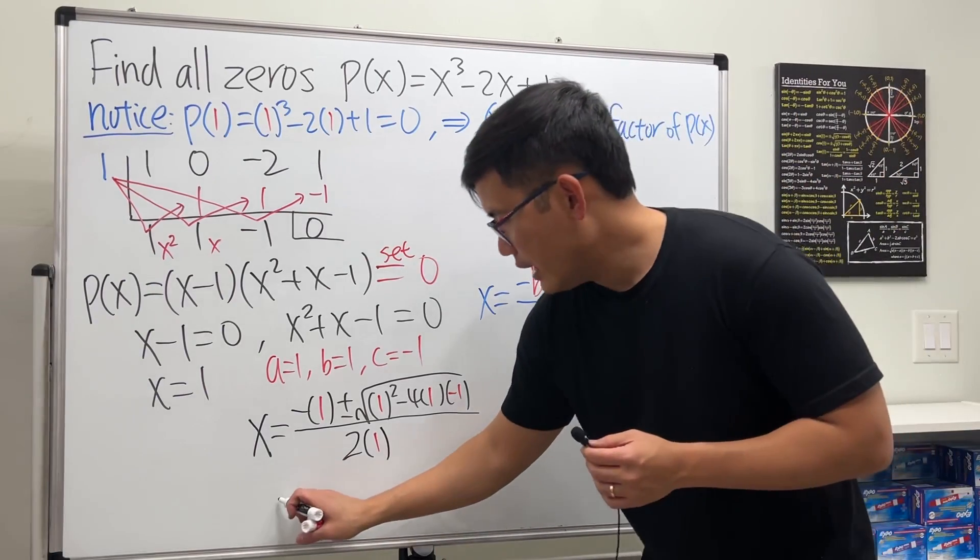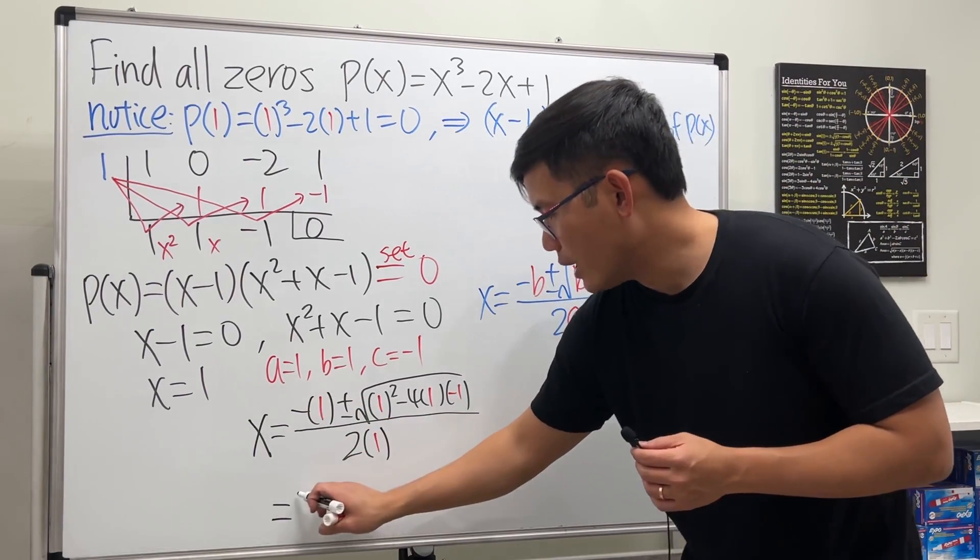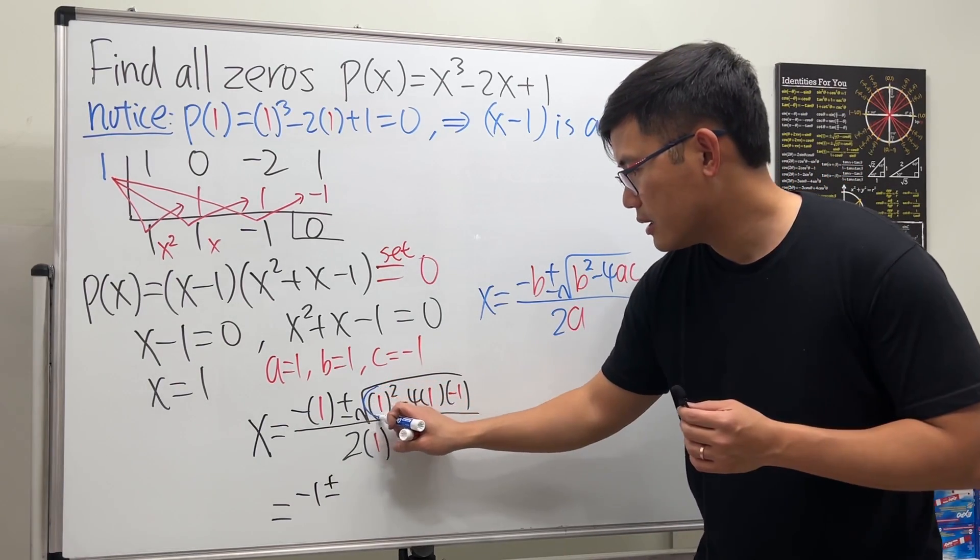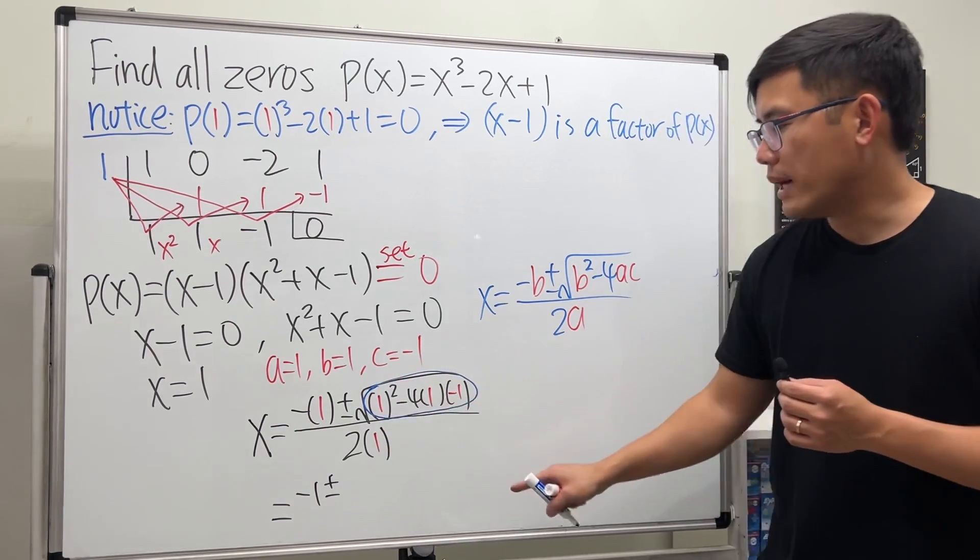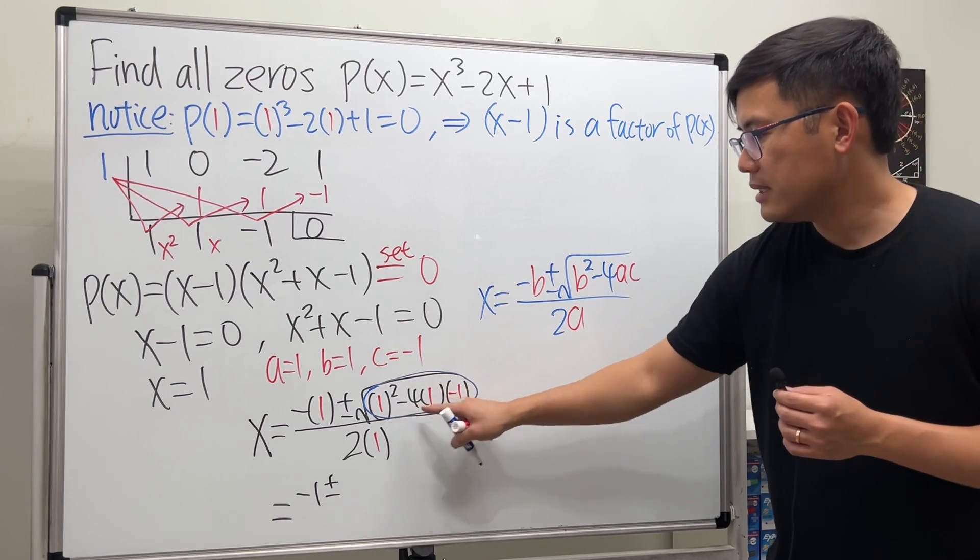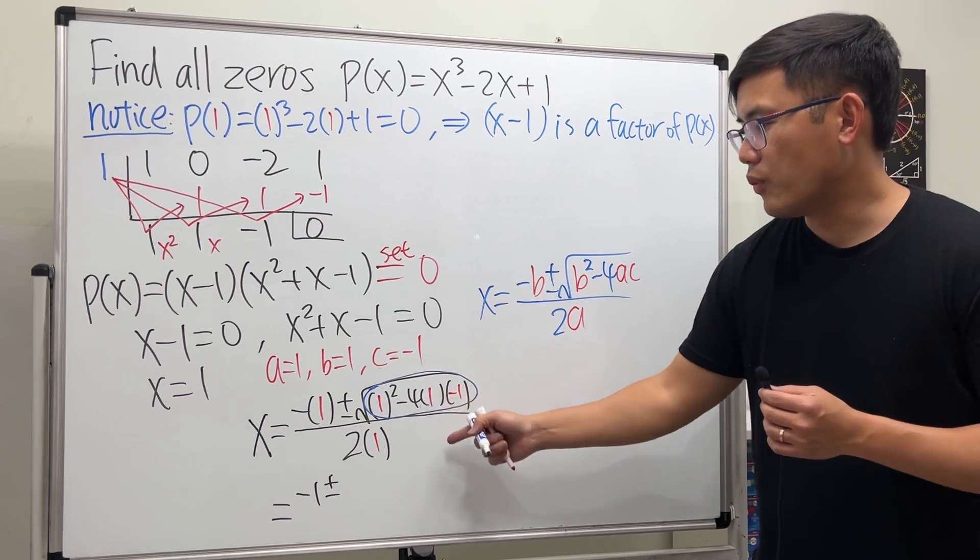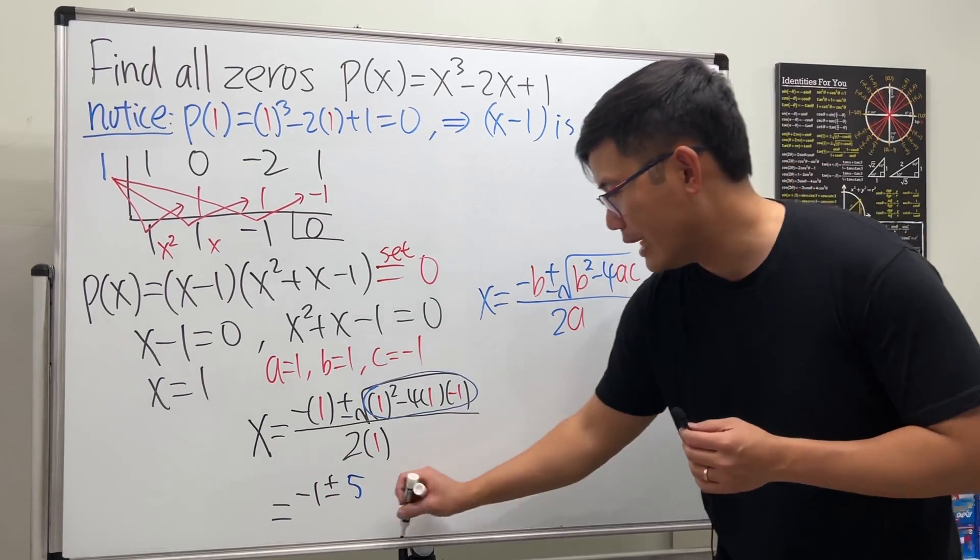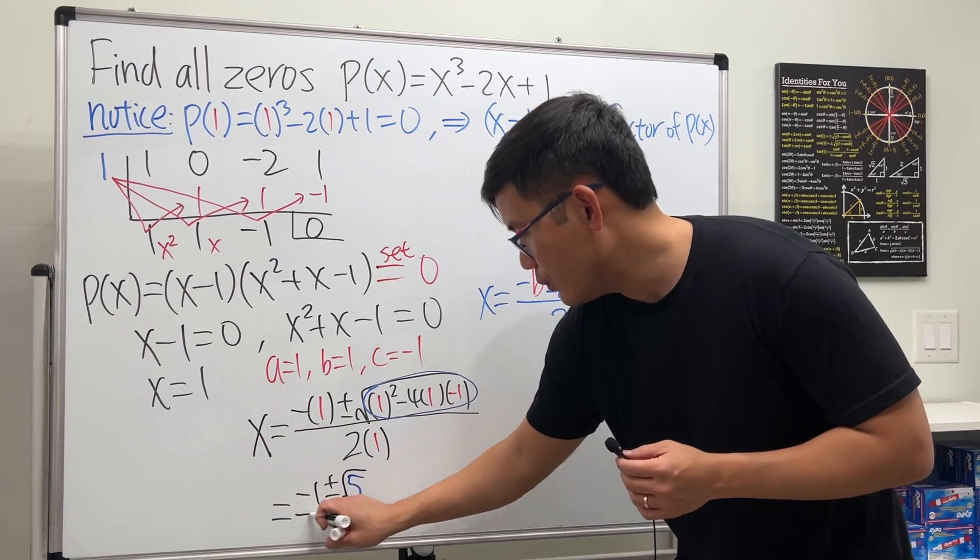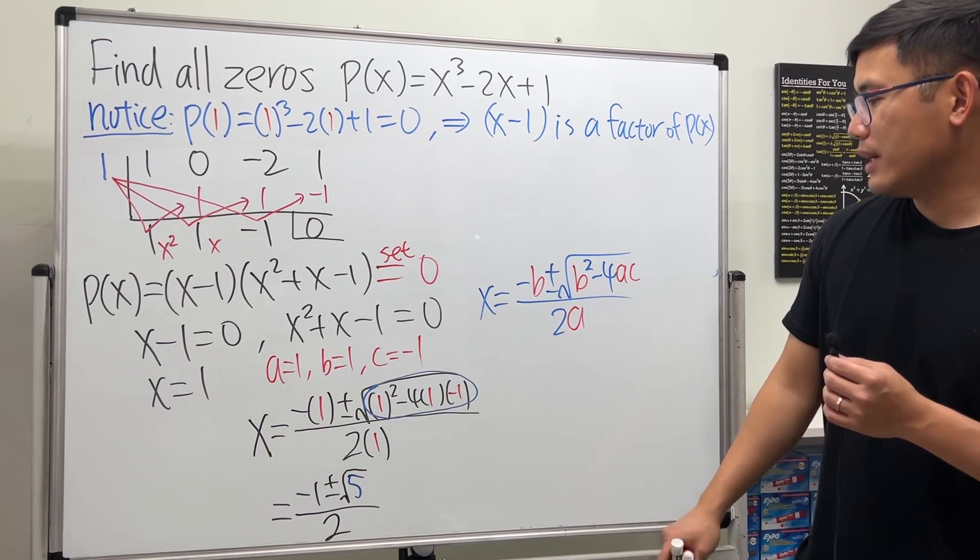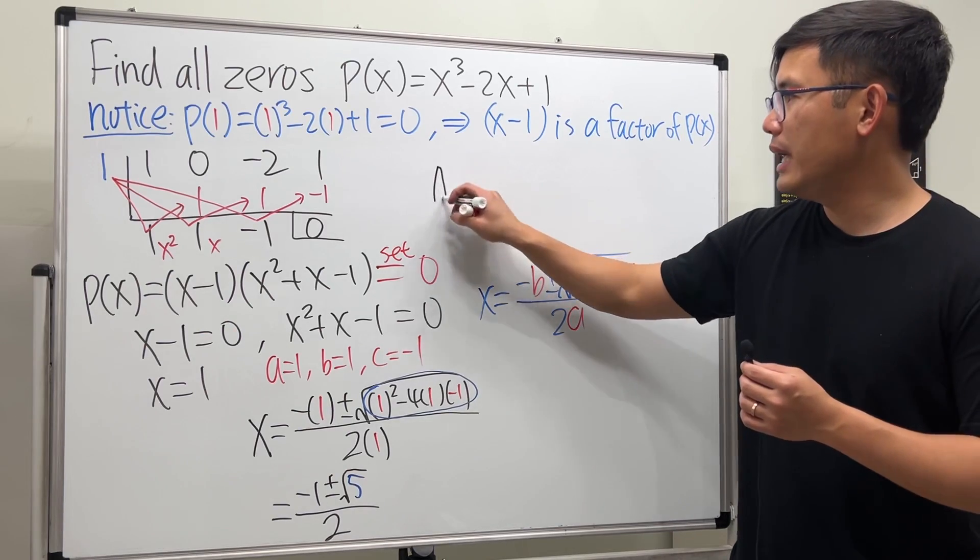Negative one plus or minus, for the inside here that's one squared which is one, and then minus minus is positive, and then just four. So all together we have a five inside and then we have that square root, and we divide it by two. So I will write this down for the final answers.